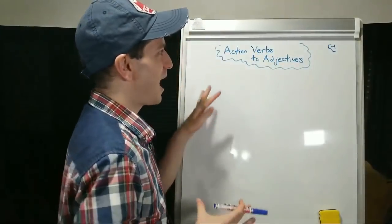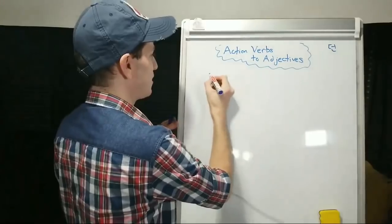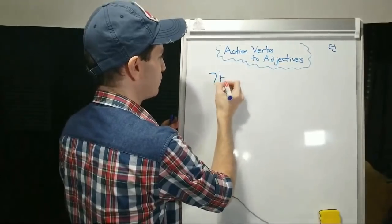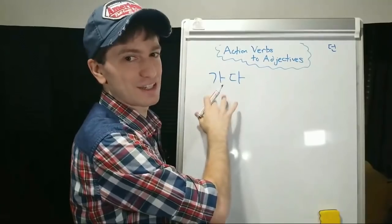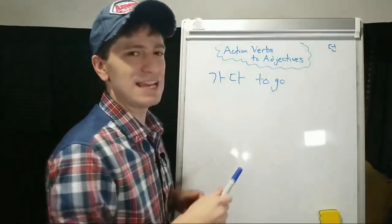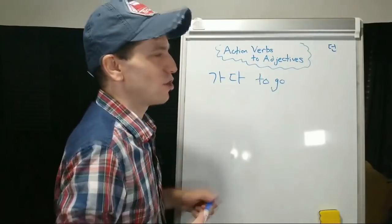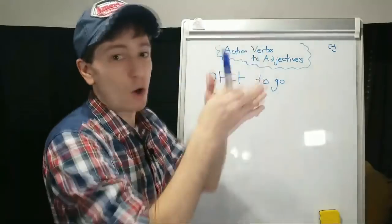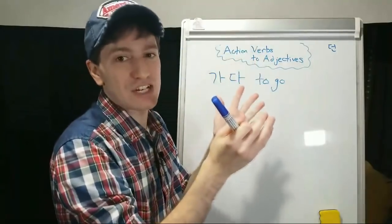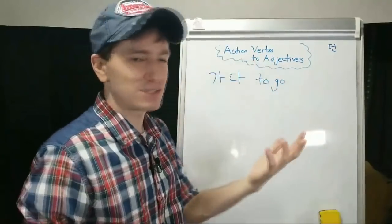What we're going to be talking about today is how to turn action verbs. Let's take a simple action verb: 가다, to go. An action verb is any verb where you're doing something — to open, opening, it's an action verb. To live, living is an action verb.